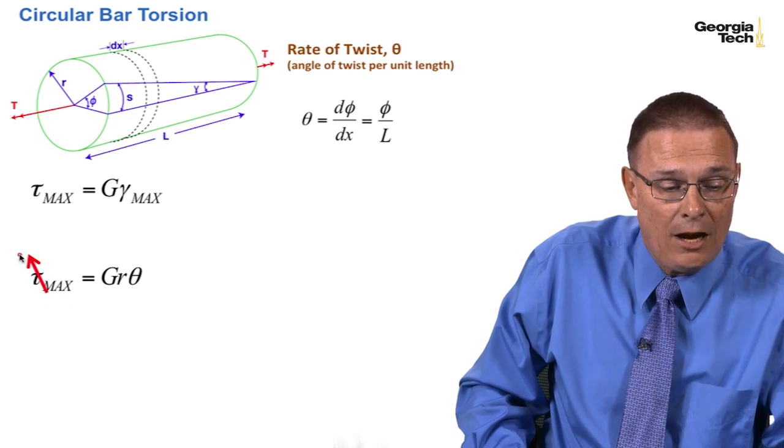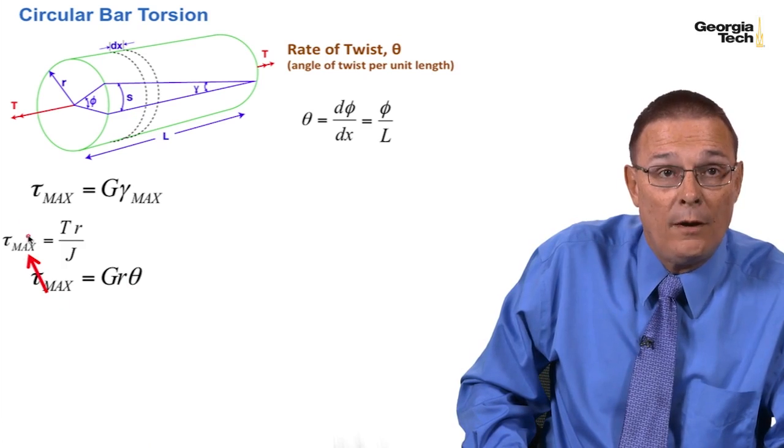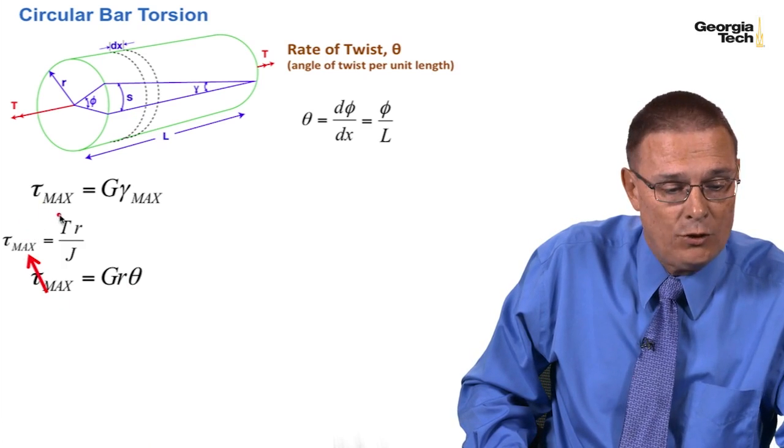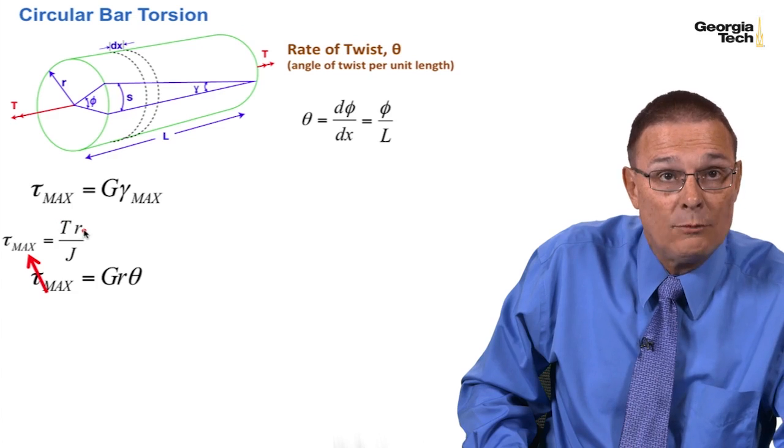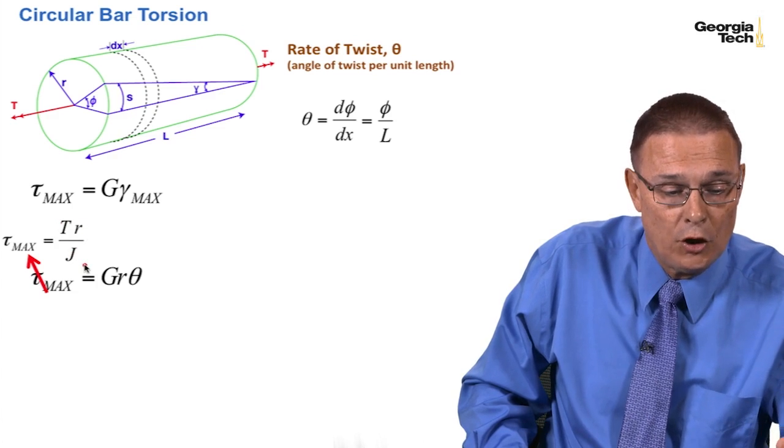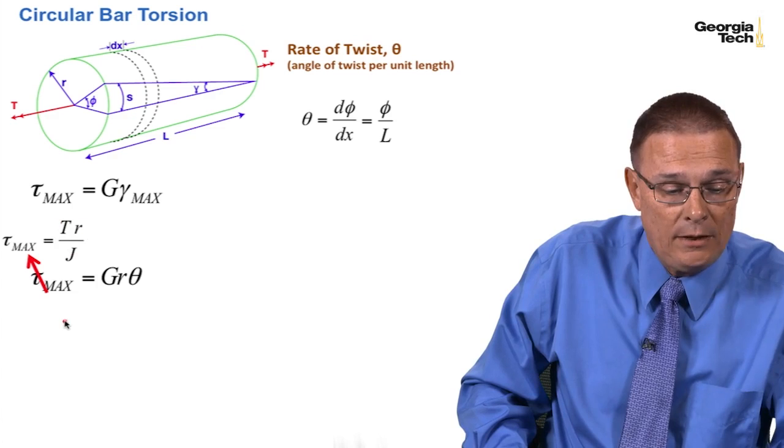I can substitute in for tau max. We found that that was equal to, in last module, the applied torque times the radius over the polar moment of inertia.